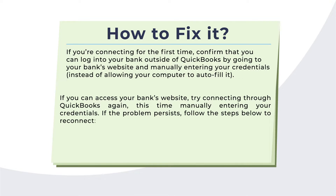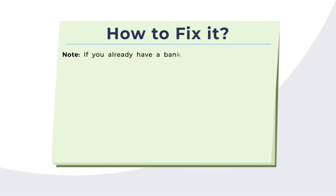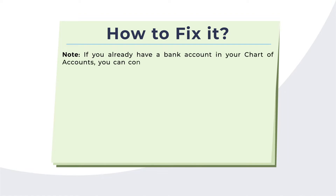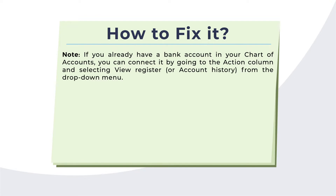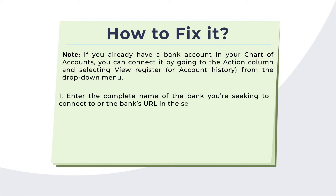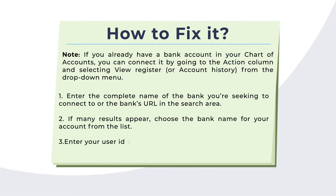If the problem persists, follow these steps to reconnect. Select Add Account from the Banking option on the left. Note: if you already have a bank account in your chart of accounts, you can connect it via the Action column by selecting View Register or Account History from the drop-down menu. Enter the complete name of the bank or its URL in the search area. If many results appear, choose the bank name for your account from the list, then enter your user ID and password to log in.